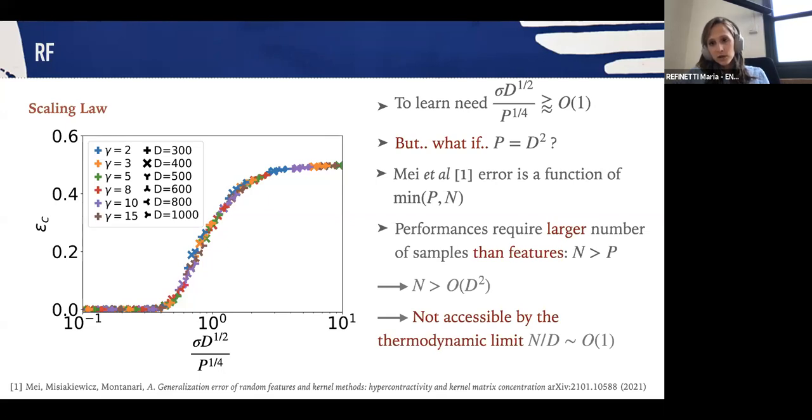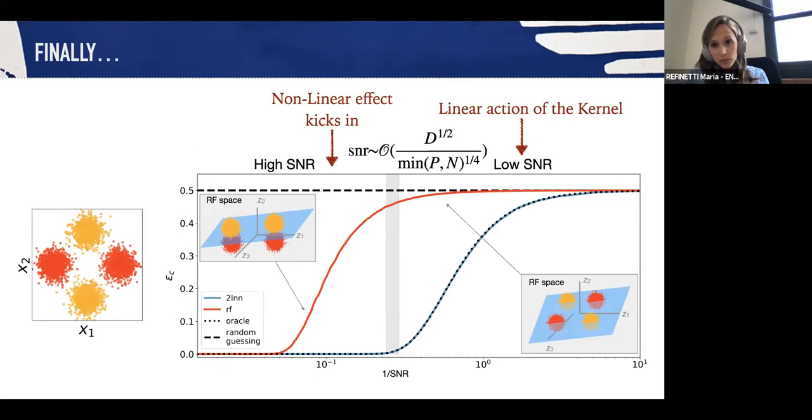To resume the results, we see that at low signal-to-noise, the kernel only does a linear projection into feature space, and so that means random features cannot do better than chance. Then at a fixed value of signal-to-noise ratio, we see that the non-linear effects kick in, the mixture becomes separable in feature space, and the network is able to learn.